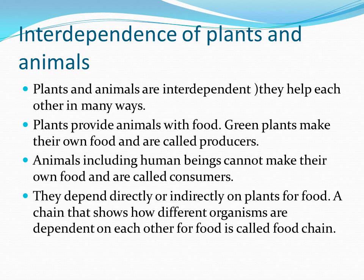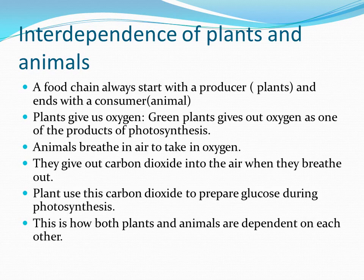We get fruits from plants, cereals and pulses from plants — so directly we are dependent on plants. Indirectly, if we are non-vegetarian and eat chicken or mutton, those animals are herbivorous and eat plants, so indirectly we are also taking from the plants. This direct or indirect dependence is called a food chain. In the diagram on page 17, a plant is eaten by a deer and the deer is eaten by a lion — this chain shows how different organisms depend on each other.